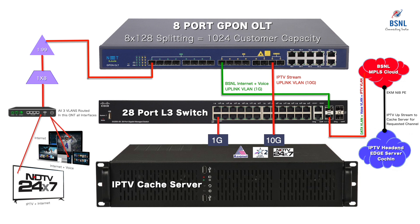On the downlink side, the cache server would be feeding the channel streams to the 300 customers as per their requests. That is the reason why there is a 1 Gbps port on the uplink side and a 10 Gbps port on the downlink side of the cache server.